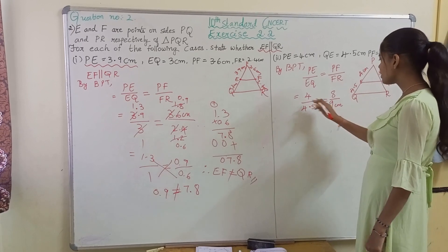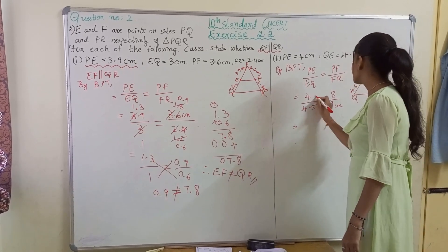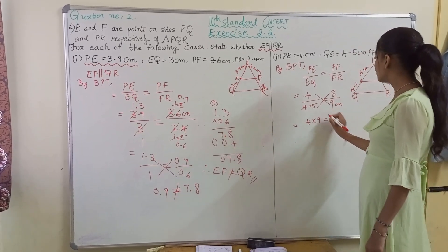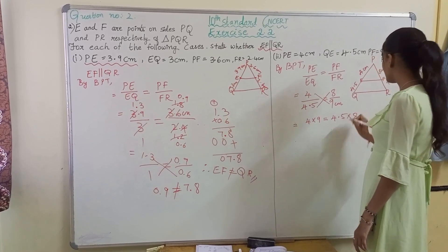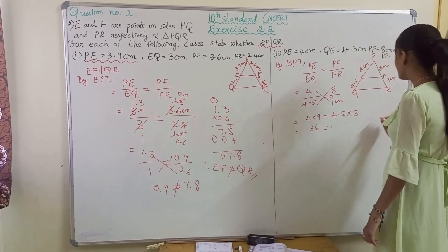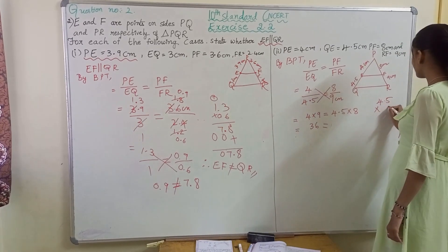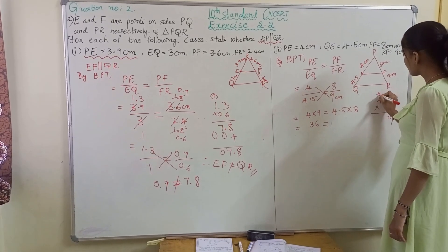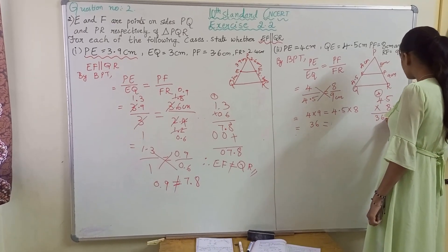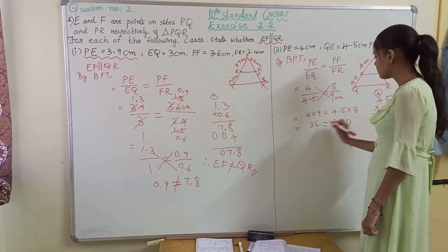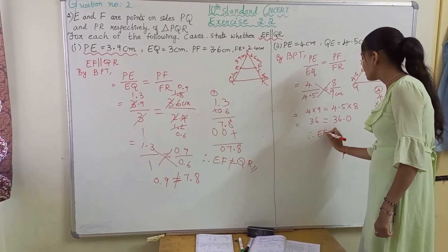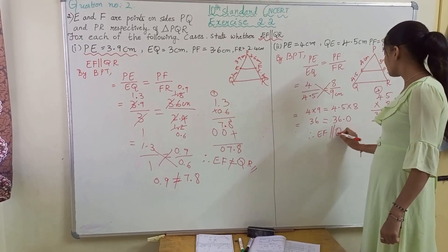So now we are not able to cancel here, so let us cross-multiply. That is 4 into 9 will be equal to 4.5 into 8. So 4 into 9 is 36. And 4.5 into 8: 8 times 5 is 40, 8 times 4 is 32, so 32 plus 4 is 36. So 36 equals 36. Therefore in this case EF is parallel to QR.